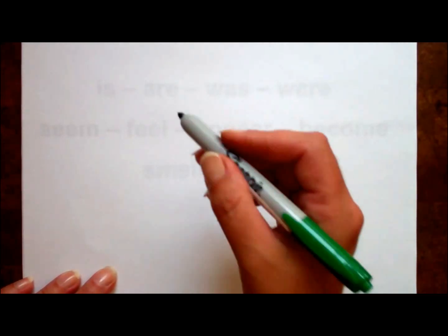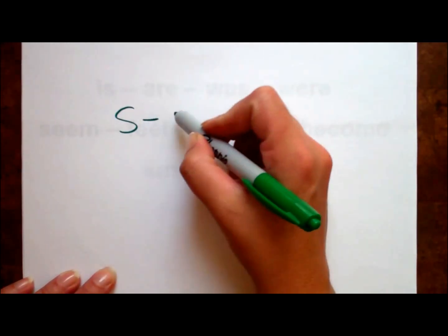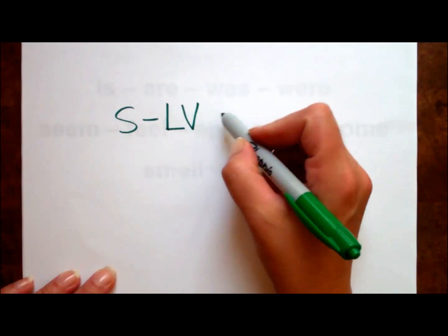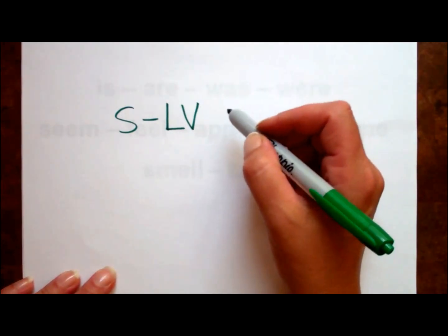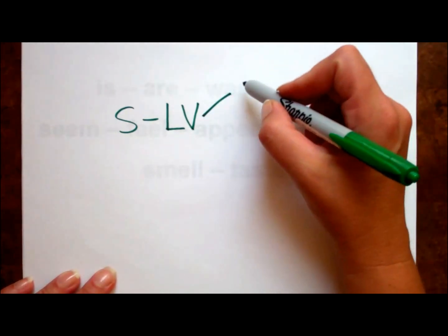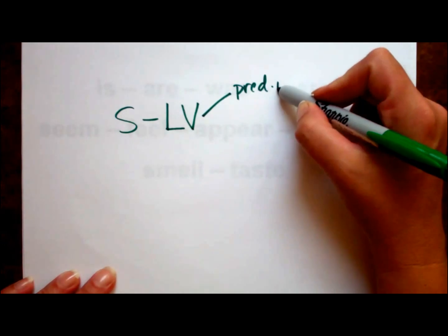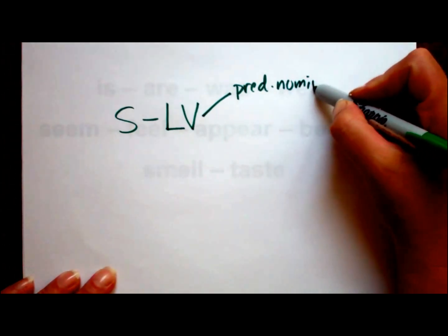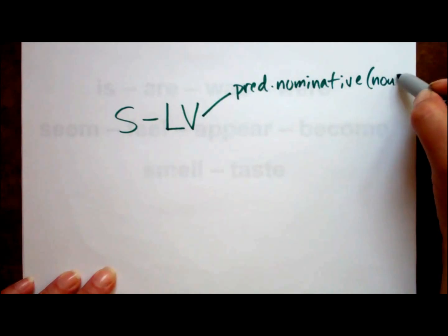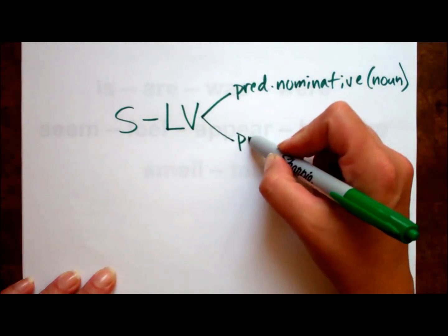Our sentence order will look like this: subject, linking verb, and then complement. Now the complements can take two forms. Your complement will either be called a predicate nominative, which is a fancy way of saying noun, or a predicate adjective.